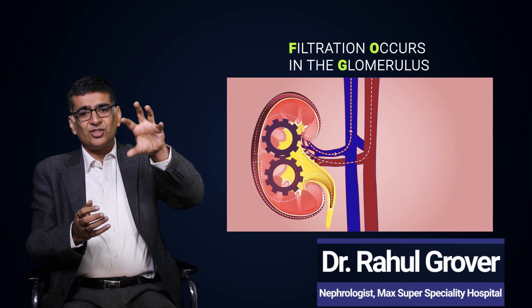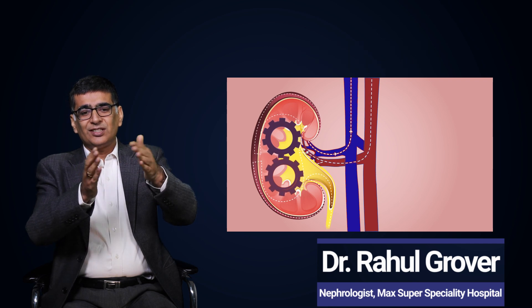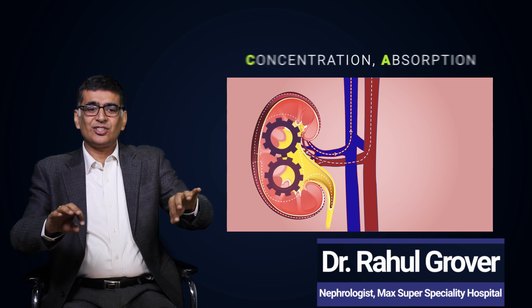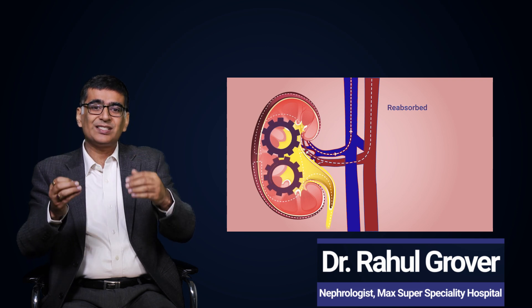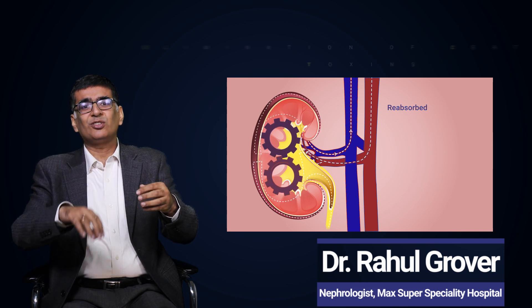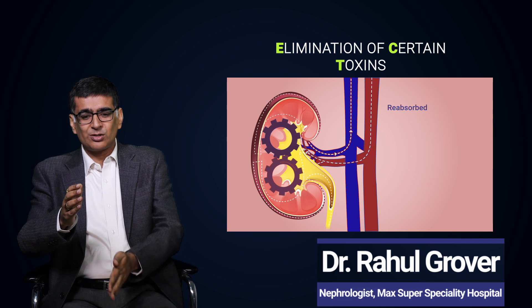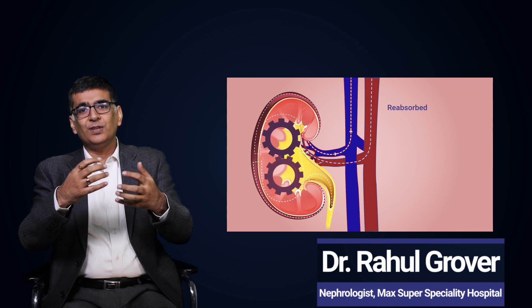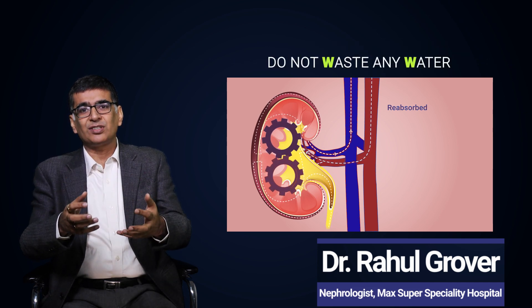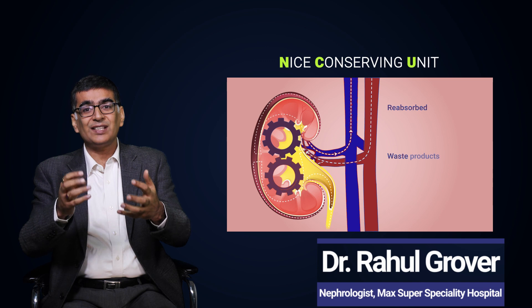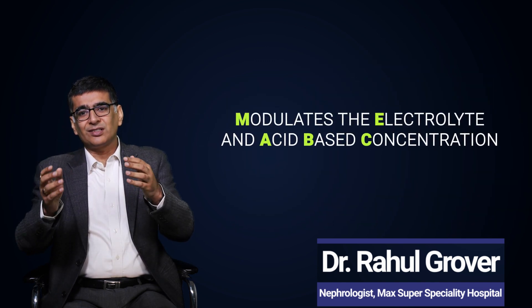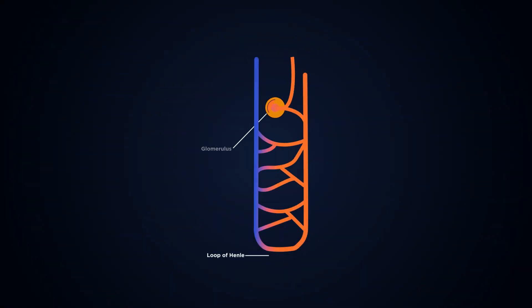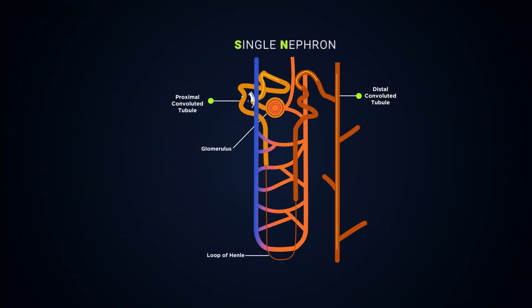Filtration occurs in the glomerulus. Then in the tubules, there is concentration and absorption of the things which the body needs, and also elimination of certain toxins. In the loop, there is a lot of concentration so that you do not waste any water — you are able to conserve it. So it is a very nice conserving unit. Finally, it also modulates the electrolyte concentrations and acid-base balance. So all these things are done by a single nephron.